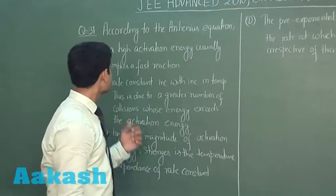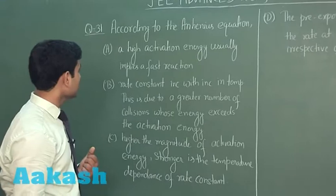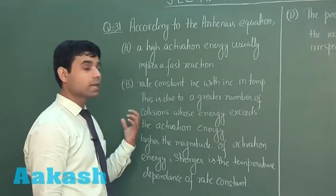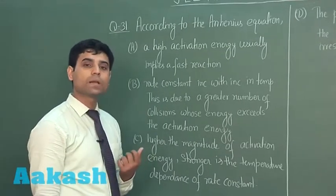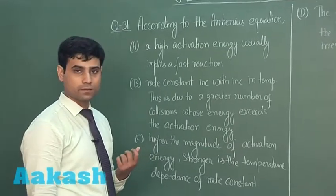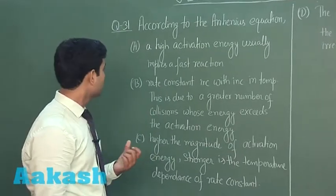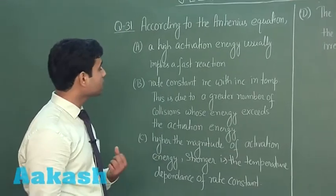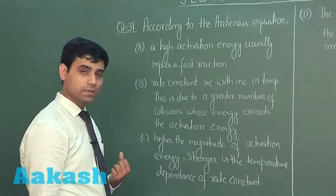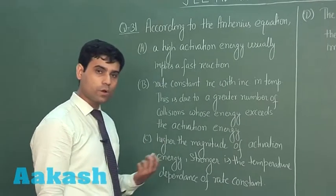This is question number 31, which is the last multiple correct question. According to the Arrhenius equation, we have 4 options to evaluate.